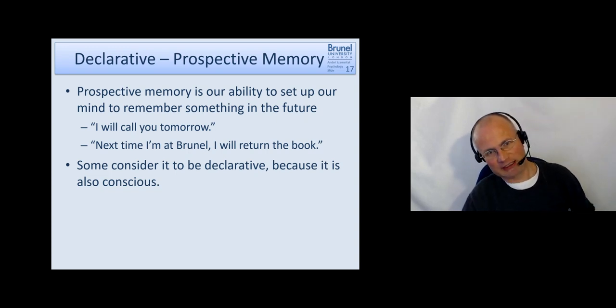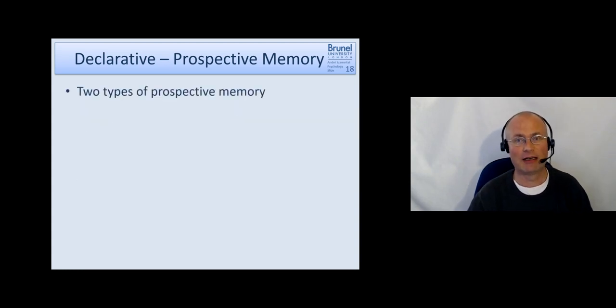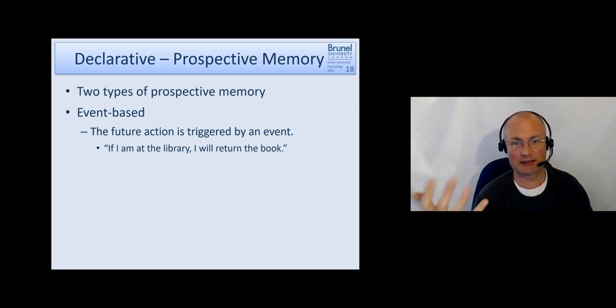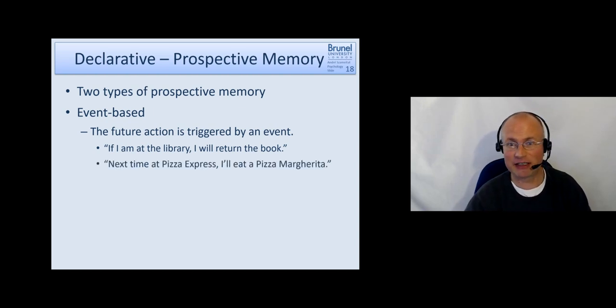Some people would put it into the category of declarative memory because it's also a conscious process, conscious memory. There are two different types of prospective memory. One is event-based. In this type, the future action is triggered by an event. For instance, 'if I am at the library, I will return the book.' No matter when I'm at the library—it can be tomorrow, next week, or next month—if I've really set up my mind to it, then this memory will spring to my mind and say 'oh, I'm in the library, I wanted to return the book.' So it's the context. Another example: 'next time at Pizza Express, I'll eat a pizza margherita.'